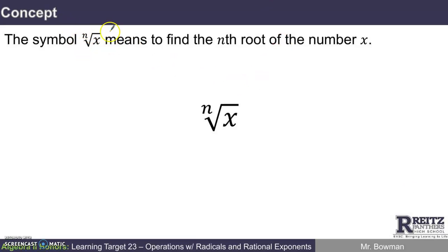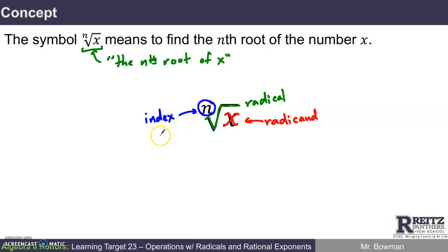Okay, so the symbol here, we'd read this like the nth root of x, literally means to find that nth root of whatever the number x is. The notation, this symbol here, is called the radical. I hope you know, we discussed it a little bit in Learning Target 22, that whatever the input to this is, is called the radicand. And there's a special name for the number, the n of the nth degree that we're finding, and that's called the index of the radical.